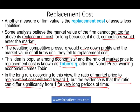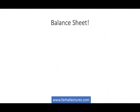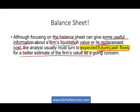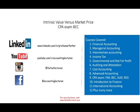Everything we talked about in this session — book value, liquidation value, replacement cost — focused on assets minus liabilities, all based on the balance sheet. Looking at the balance sheet can give us useful information about a firm's liquidation value and replacement cost. But when we analyze stocks, what we really look for is future cash flows — how much the firm is going to generate in the future. The balance sheet is backward-looking; future cash flow gives a better estimate of the firm's value as a going concern. Starting with the next session, we'll look at intrinsic value versus market price, then dividend models and discounted cash flow approaches.